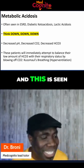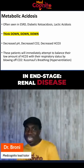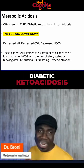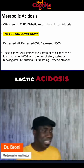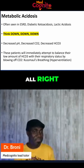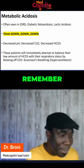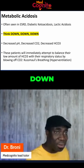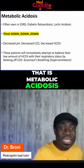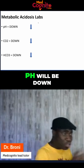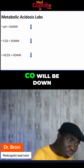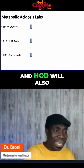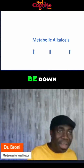This is seen in end-stage renal disease, diabetic ketoacidosis, and lactic acidosis. Remember: down, down, down — that is metabolic acidosis. Therefore, pH will be down, CO2 will be down, and HCO3 will also be down.